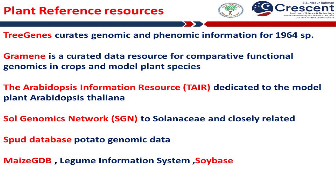Gramene is a curated data resource for comparative functional genomics in crops and model plant species. A reference multi-integrated platform is the Arabidopsis Information Resource (TAIR), a representative example of a plant species-specific database proposed as a multi-level platform, because it contains data from different levels — transcriptomics, proteomics, etc. — and methodological approaches such as microarray, RNA sequencing, etc.